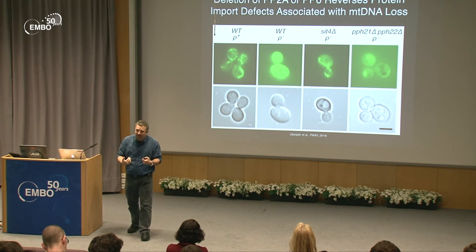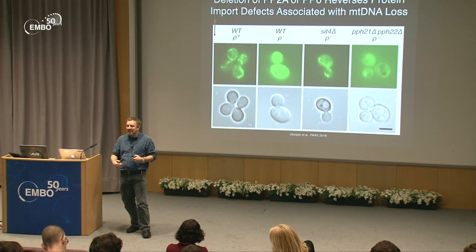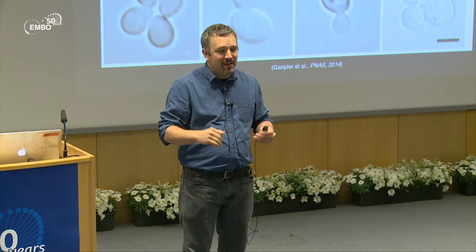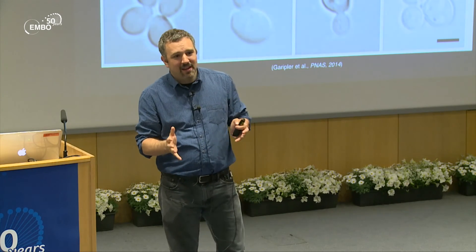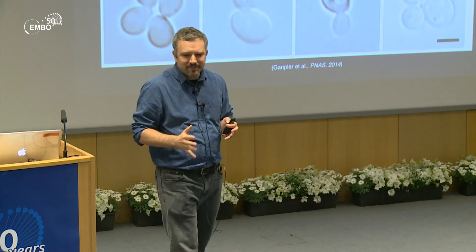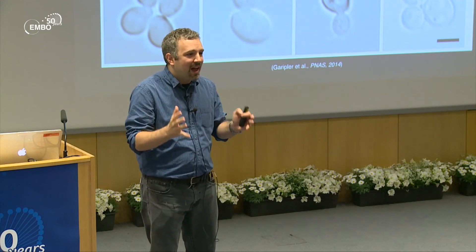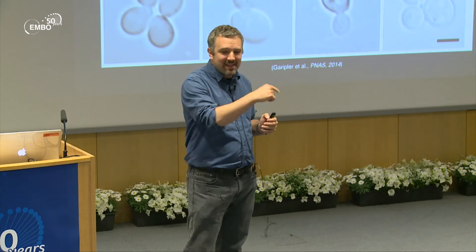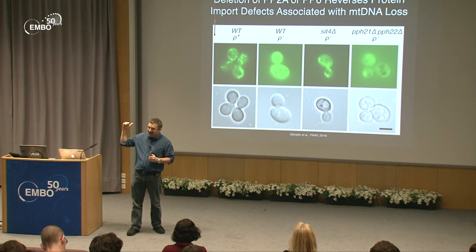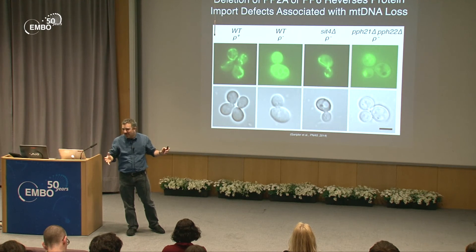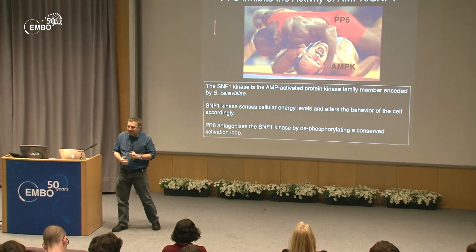The most proximal effect relevant to proliferation defects is impaired protein import into mitochondria, which is essential for any living eukaryotic cell. We tagged GFP with a mitochondrial targeting sequence — if not imported it fills the cytosol. In rho-minus cells this import defect is reversed by the phosphatase deletions.